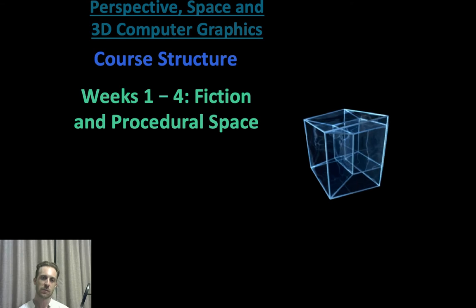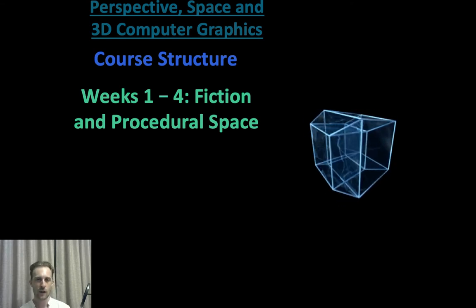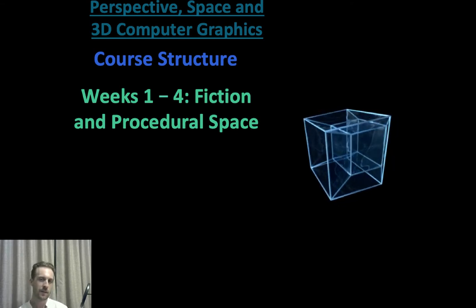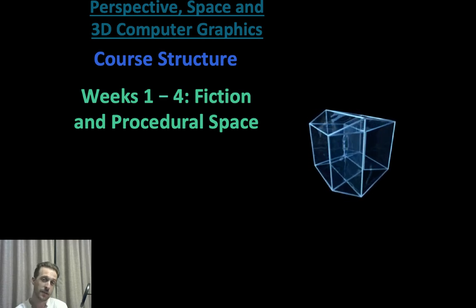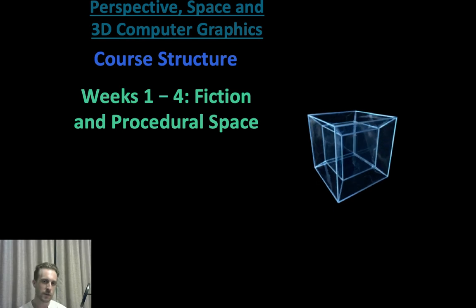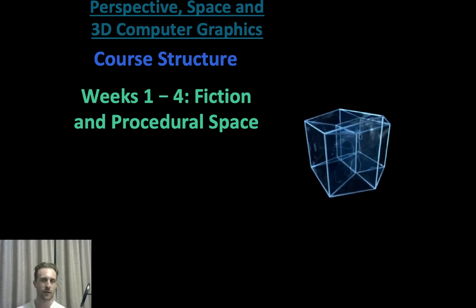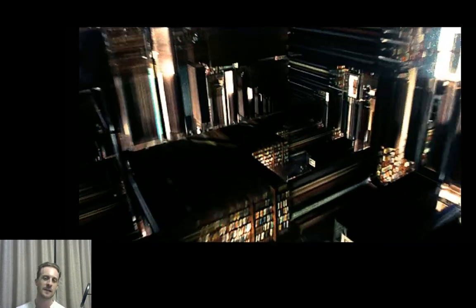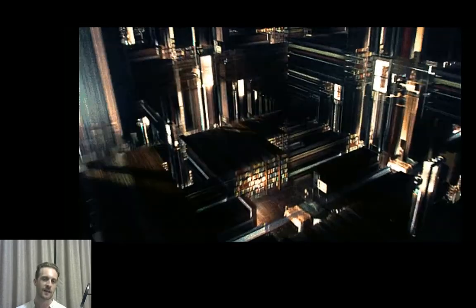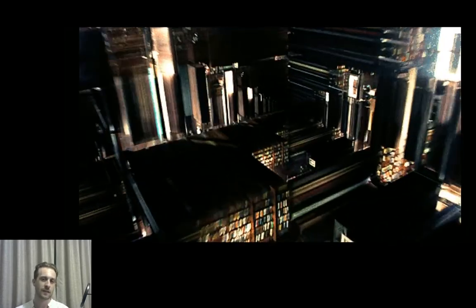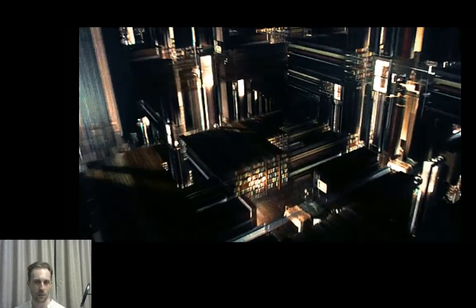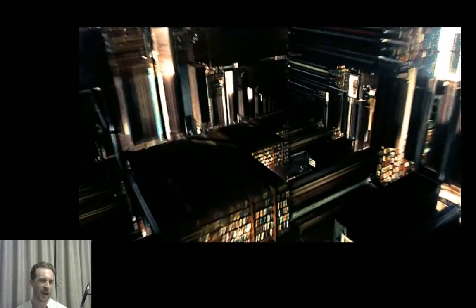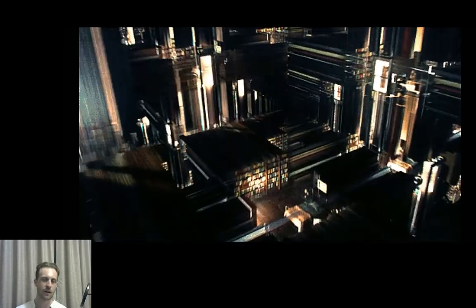In fiction and procedural space, we might also look at some of the stranger types of space that exist in mathematics and in fiction. Here we have the famous Tesseract four-dimensional cube, and we'll look at that a little bit for a bit of fun. Another fictional space based on ideas of procedures and rules is the film Interstellar — when the protagonist falls into the black hole, he ends up in this type of infinite space. These are also the strange repeating spaces that 3D editors are very good at making.